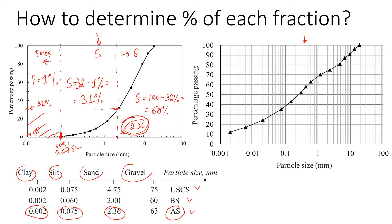Now let's look at the second example. In this case the curve goes all the way to a size of 0.002 millimeters, which implies this soil has fine particles compared to the first example, where data ended at 0.075 millimeters. Because we have more data about fines, we can also divide them into silt and clay.